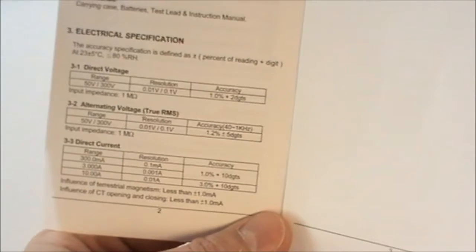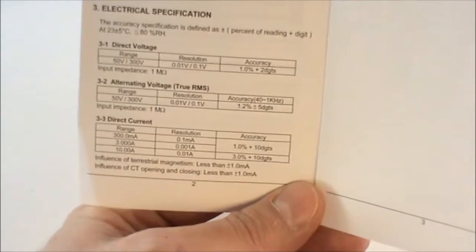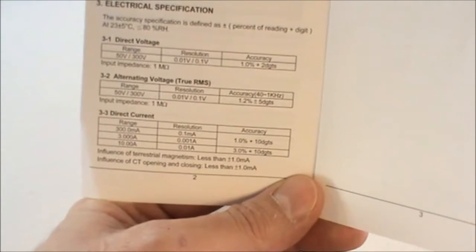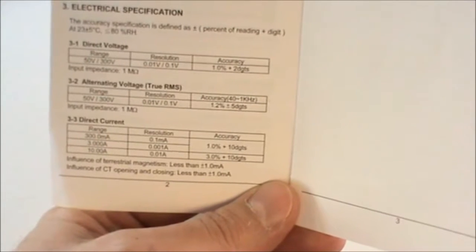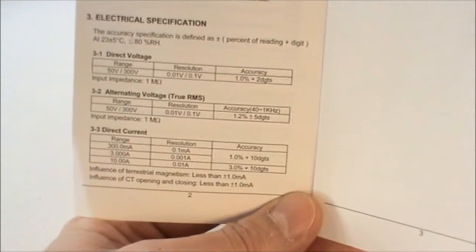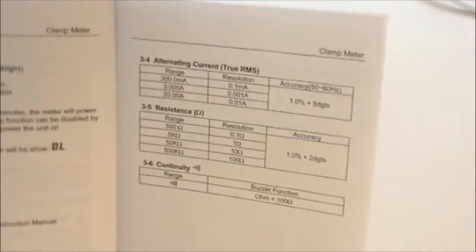Direct current. So this is now in the clamp meter functionality up to 10 amps with 0.01 of an amp resolution there. And the 10 amp range down to 300 milliamp range with 0.1 of a milliamp resolution.